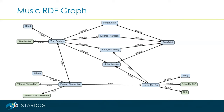Here we see a small snippet from a larger music dataset. In this music graph, we have nodes representing musicians, albums, and songs. For example, there's a node representing the band The Beatles, nodes representing its members, one of their studio albums, and a song from that album. We also have some data values like strings, numbers, and dates.